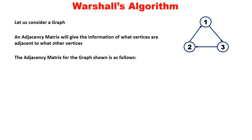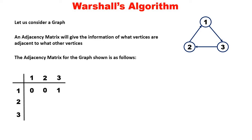The adjacency matrix for this graph is as follows. 1 to 1: is there a direct edge? No, therefore 0. 1 to 2: is there a direct edge? No, therefore 0. 1 to 3: yes, therefore 1. 2 to 1: yes, there is a direct edge, therefore 1. 2 to 2: no. 2 to 3: no. 3 to 1: no. 3 to 2: yes, there is a direct edge from 3 to 2, therefore 1. 3 to 3: there is no direct edge, therefore 0.